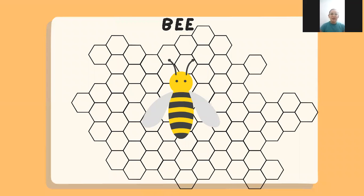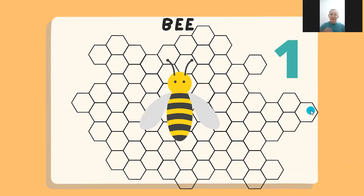Who can tell me what is this? This is a bee. It's yellow and black. Now let's count how many bees are in here. This is one bee. One bee. And this is the number one. Here we have one bee.